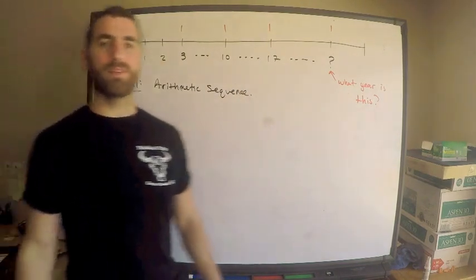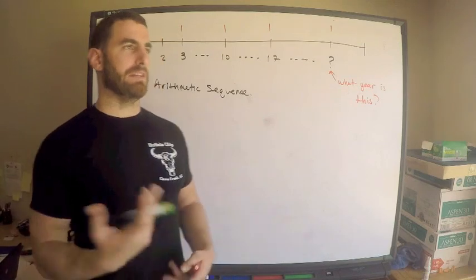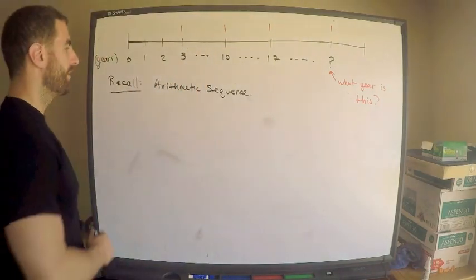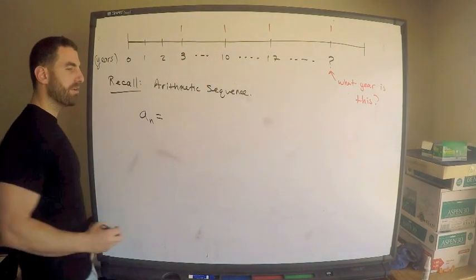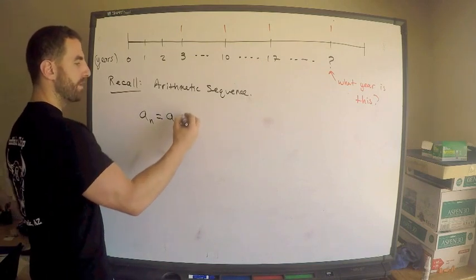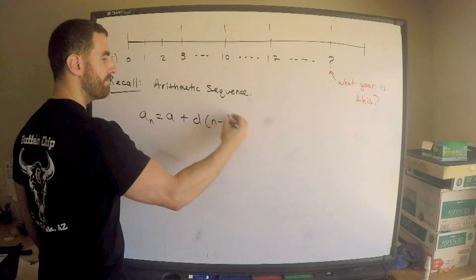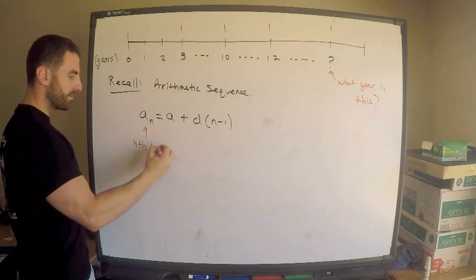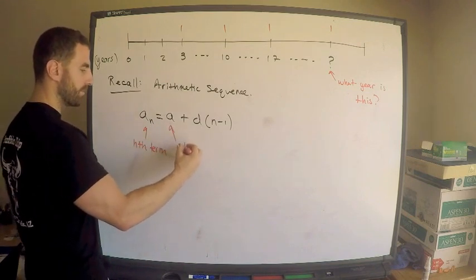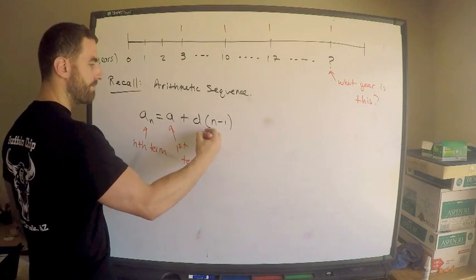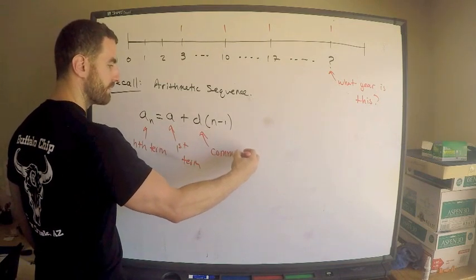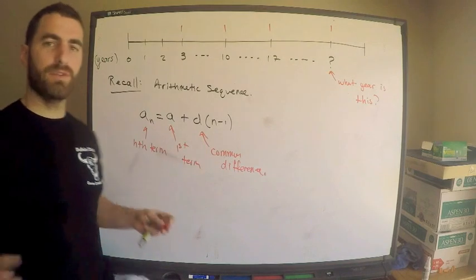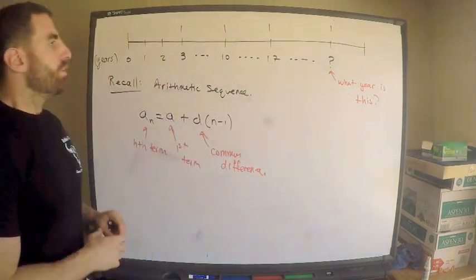I claim that my payments are made, basically the years in which the payments are made form an arithmetic sequence. Here's what I mean. The nth term, if you recall, the nth term of an arithmetic sequence is the first term plus the common difference times n minus one.